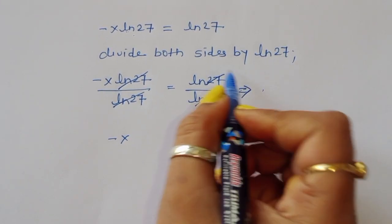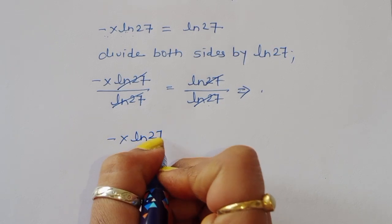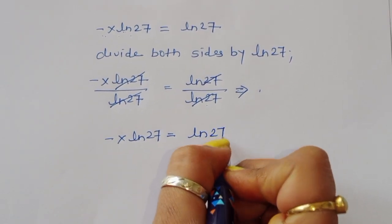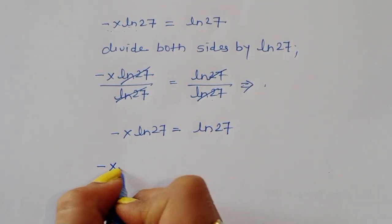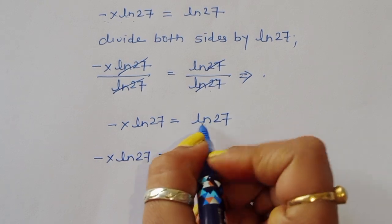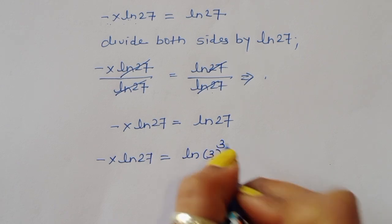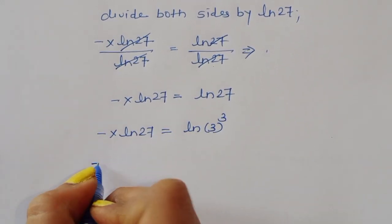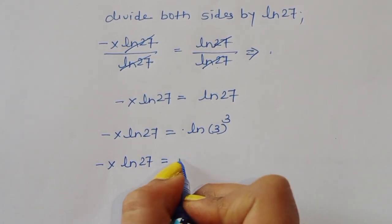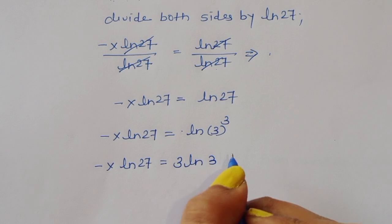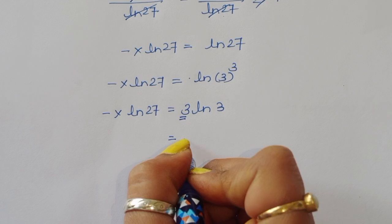Actually, we need to convert ln(27) using cube form. Since 27 equals 3 cubed, ln(27) equals 3 ln(3). So minus x times ln(27) equals 3 ln(3). Now we rewrite the right-hand side 3 as e power ln(3), according to the formula e power ln(a) equals a.